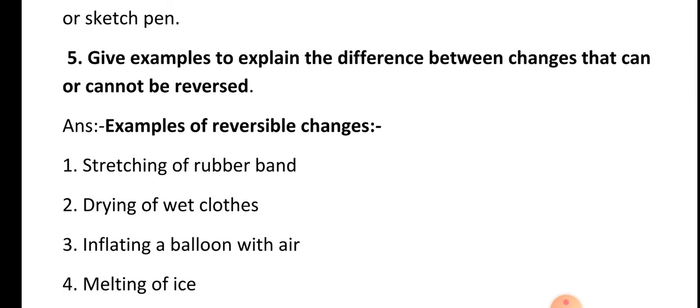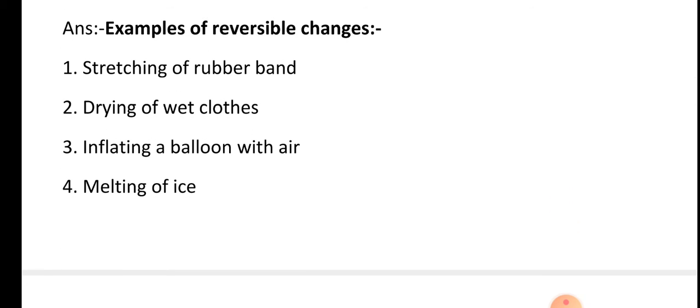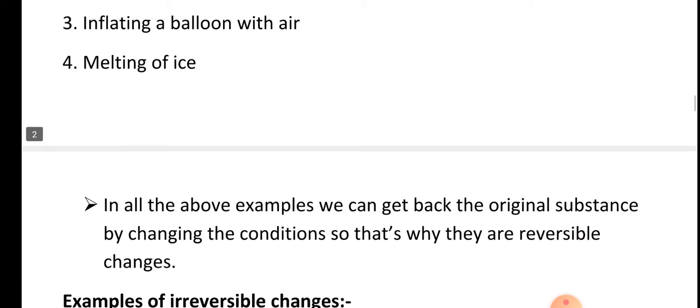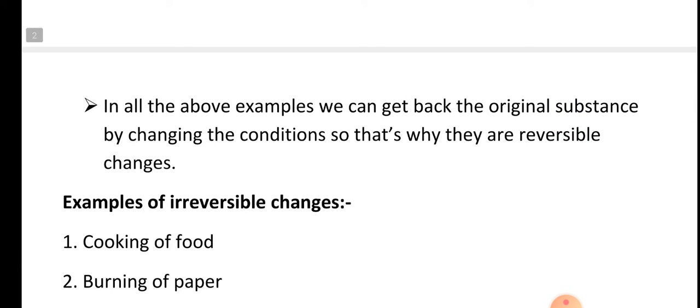Question number five: Give examples to explain the difference between changes that can or cannot be reversed. Answer — examples of reversible changes: stretching of a rubber band, drying of wet clothes, inflating a balloon with air, melting of ice. In all the above examples, you can get back the original substance by changing the conditions, which is why they are reversible changes.